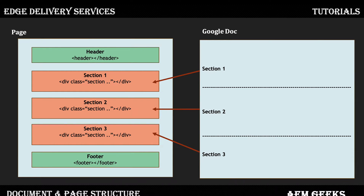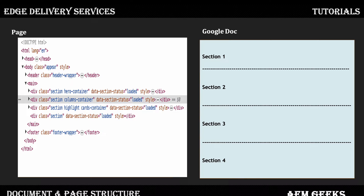Each section will be rendered in a particular div, creating a div in your HTML. Inside this section, whatever you add — let's say some blocks or some default content — those will be part of that particular div on your page. For example, in section one you might configure a hero container, and those sections will be rendered like this in your HTML page.